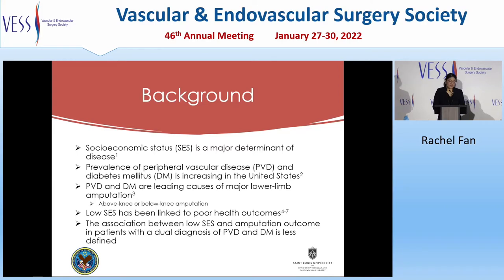Socioeconomic status is a major determinant of disease, and the causal pathways between socioeconomic status and disease are complex. The prevalence of peripheral vascular disease and diabetes mellitus is on the rise in the United States. Both are leading causes of major lower limb amputation, defined as either an above-knee or below-knee amputation. While low socioeconomic status has been linked to poor health outcomes in peripheral vascular disease, diabetes, cardiovascular disease, and end-stage renal disease, the association between low socioeconomic status and amputation outcome in diabetic patients with peripheral vascular disease is less defined.